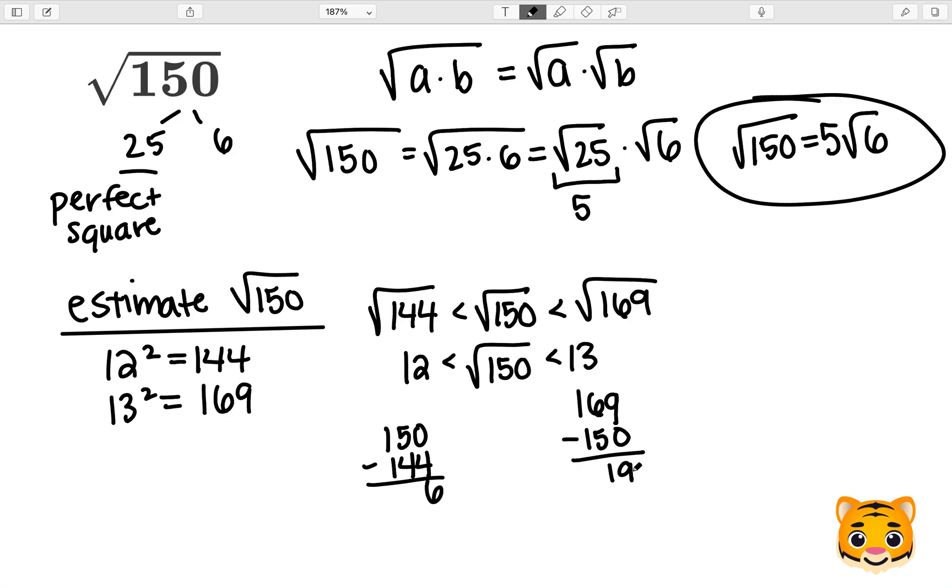6 is less than 19, so 150 is closer to 144 than it is to 169. This leads us to the conclusion that 12 is closer to the square root of 150. Therefore, we can approximate the square root of 150 as about 12.